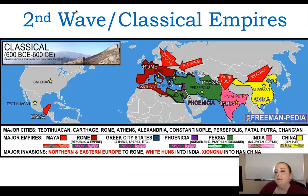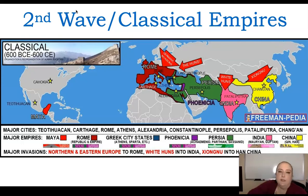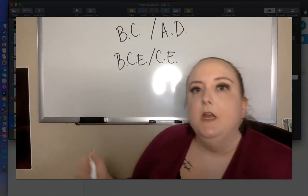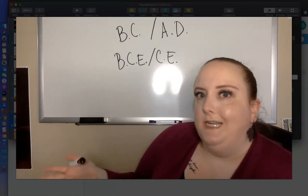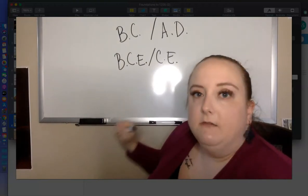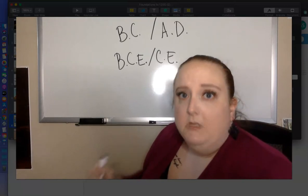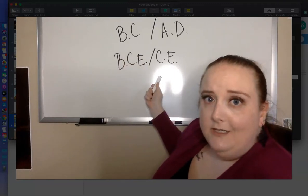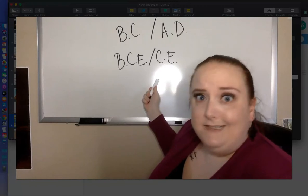The second wave is known as the Classical Empires — the Romans, the Mayans, and the Greeks. You still need to know about them vaguely, with a general idea of when and where they were. This is around 600 BCE to 600 CE. Quick note: BCE means Before Common Era and CE means Common Era. It's okay to use BC and AD, but don't mix them — don't use BC and CE together, as that wouldn't make any sense.